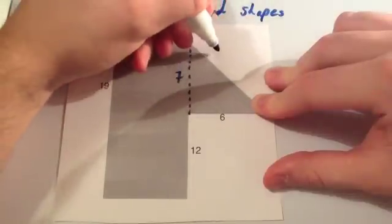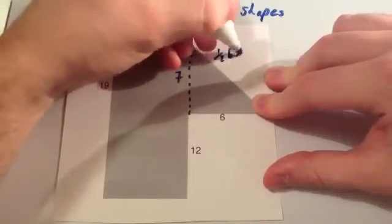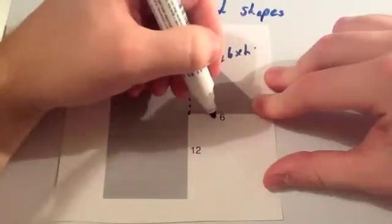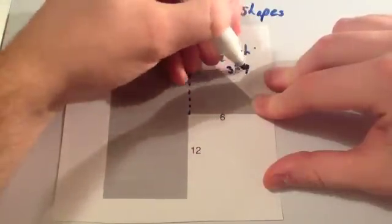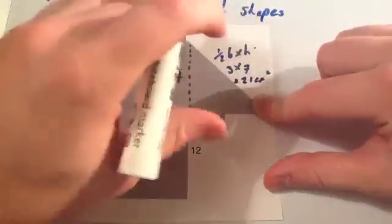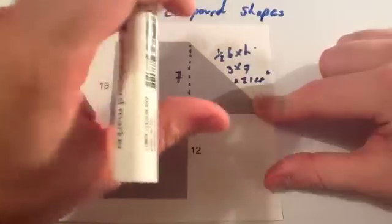To find the area of a triangle, the formula is half base times height. So we're going to do half the base times the height. Half the base, half of 6 is 3, times the height is 7. 3 times 7 is 21 centimeters squared. So the area of this triangle is 21 centimeters squared.